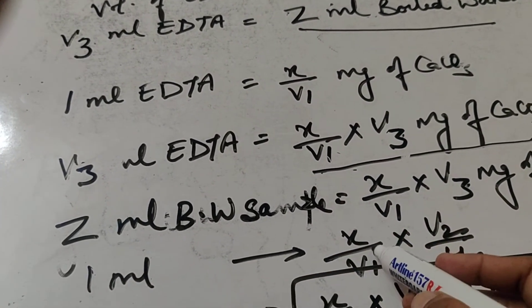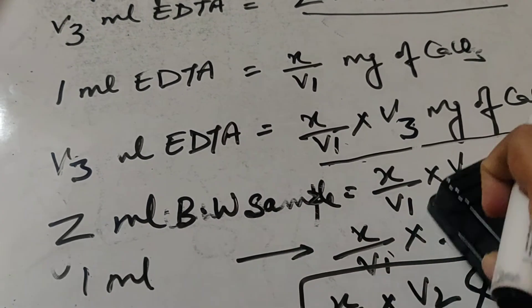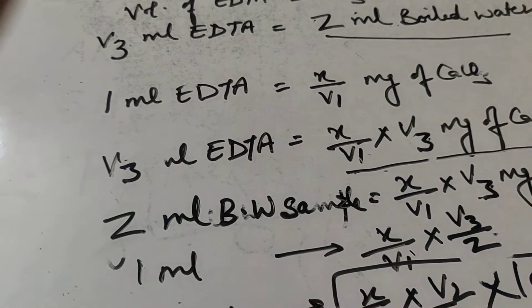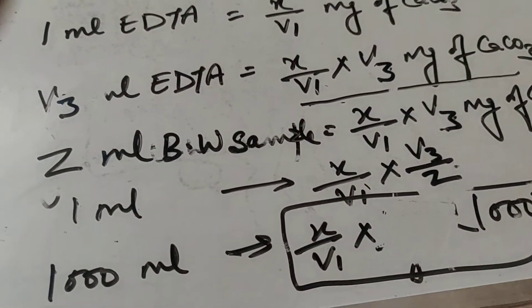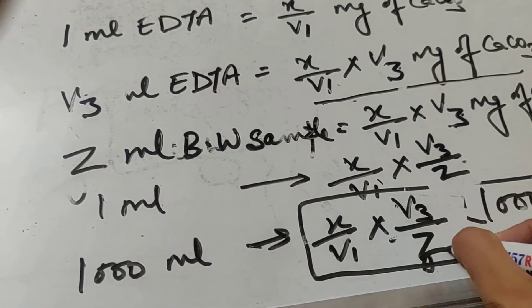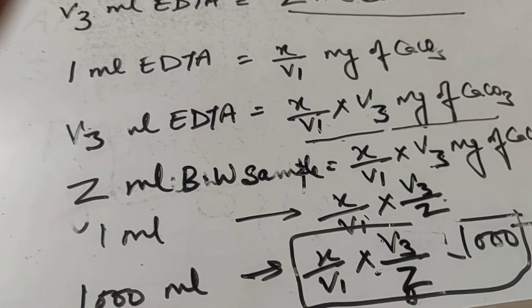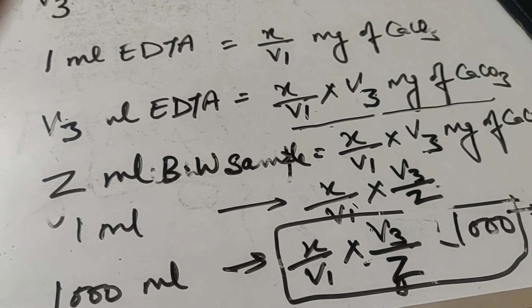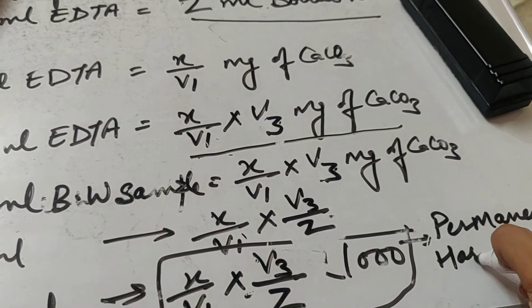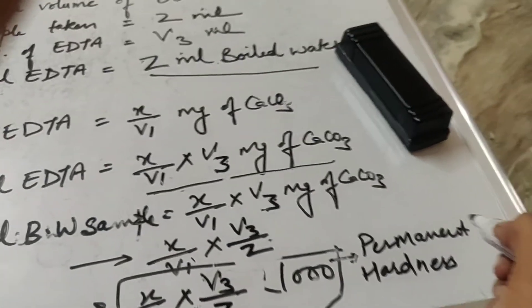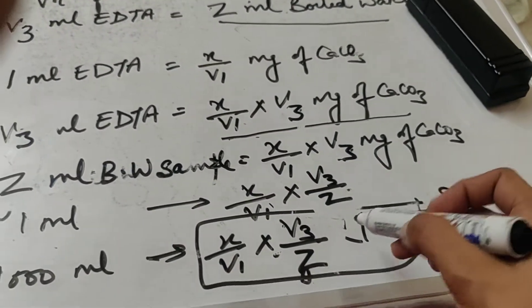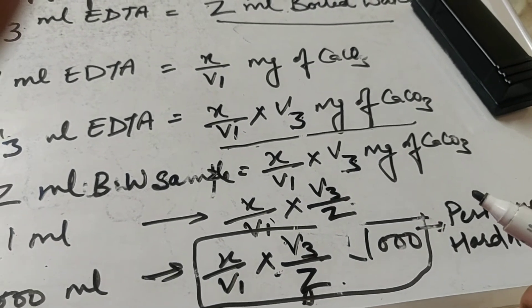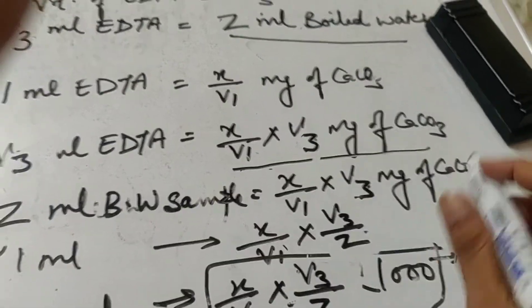For 1 ml, the CaCO₃ content is (X/V1) × (V3/Z) mg. For 1000 ml: permanent hardness = (X/V1) × (V3/Z) × 1000. This gives permanent hardness — because boiled water has had its temporary hardness removed by boiling. Subtracting permanent hardness from total hardness gives temporary hardness.